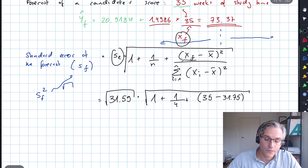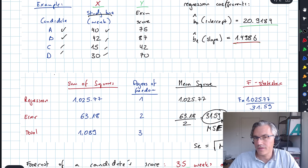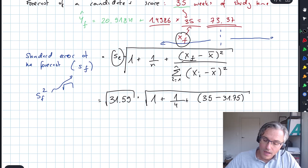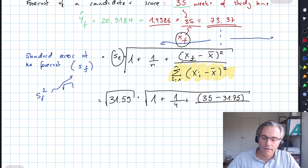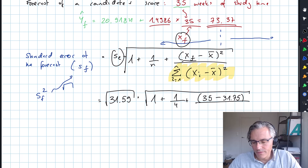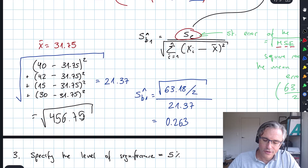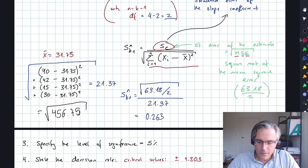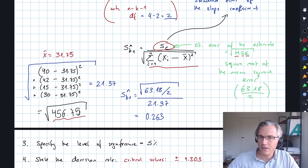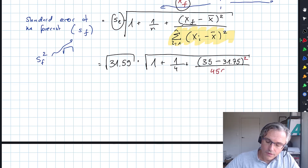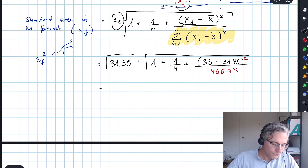31.75 is the arithmetic mean, the simple average of the X values. We divide by the sum of the squared deviations from the mean. Now, this is why I don't think this computation is very realistic for an exam. Let's not lose track of the square sign. I already calculated this term in the video on the hypothesis test of the slope coefficient — the sum of those squared deviations from the mean was 456.75.